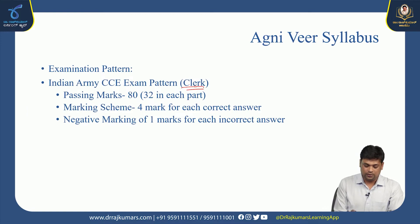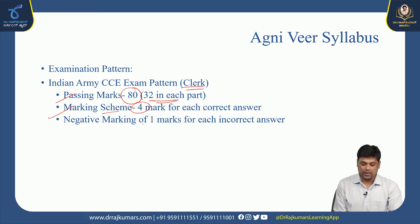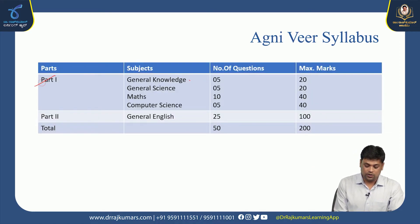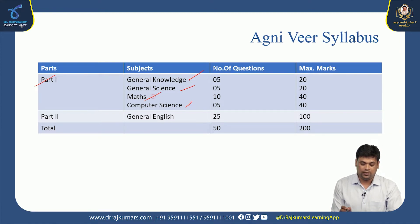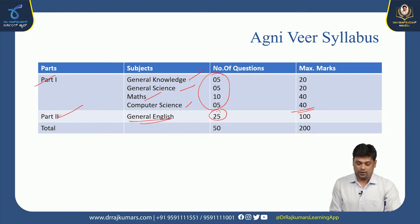Then Clerical. Passing mark is 82, and 32 marks are supposed to be scored in each part of the examination. Marking scheme: 4 marks, with negative marking of 1 mark for each incorrect answer. Part 1: GK, GS — that is general knowledge, general science, math and computer science — all together 100 marks. Part 2: general English alone, 25 questions carries 100 marks. Total: 50 questions and 200 marks.